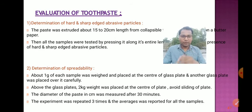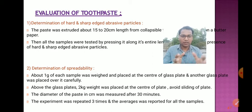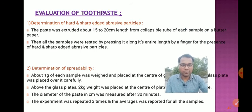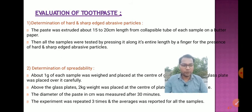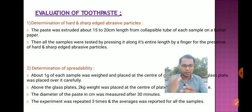Now let us discuss the evaluation of toothpaste. The first test is determination of hard and sharp-edged abrasive particles. The paste is extruded to about 15 to 20 centimeters in length from a collapsible tube onto butter paper. All samples are then tested by pressing along the entire length with a finger to detect the presence of hard and sharp-edged abrasive particles.